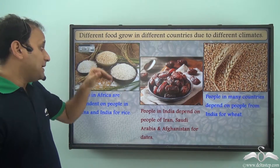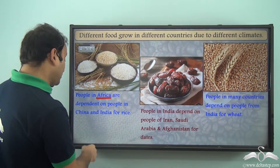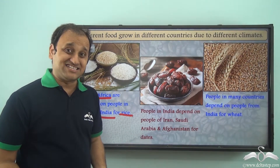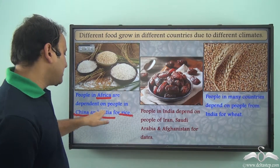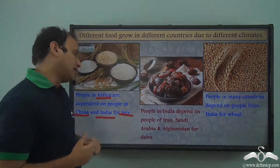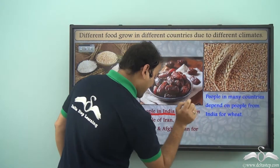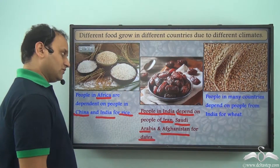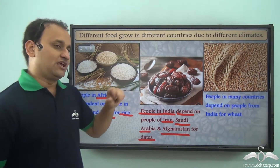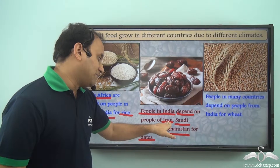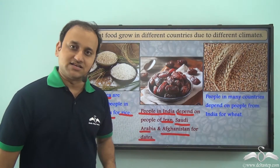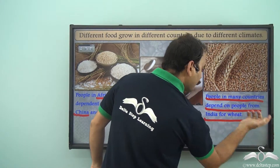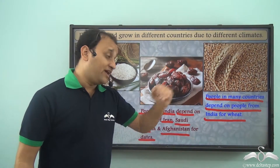If we talk about people of Africa, they are dependent on people in China and India for rice, because the climate of India and China is suitable for growing rice. So people in China and India produce rice which is supplied to people in Africa. Now people in India depend on people of Iran, Saudi Arabia and Afghanistan for dates. So while people in India can produce rice, if they want to eat dates they will have to depend on people from Iran, Saudi Arabia and Afghanistan. Now what about wheat? Well, people in many countries depend on people from India for wheat because the climate of India is very suitable for growing wheat too.